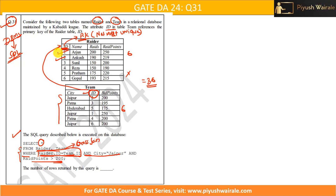After applying the join condition rider.id = team.id, the 36 rows get filtered down to six rows, because there are six matching IDs between the two tables. Now applying the next condition, city equals Jaipur — looking at the Team table, we can see Jaipur appears three times. So out of the six joined rows, three rows have city = Jaipur.